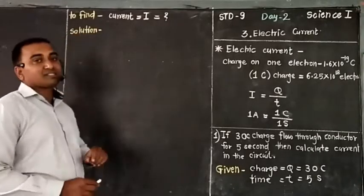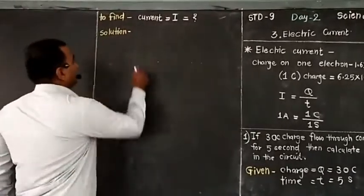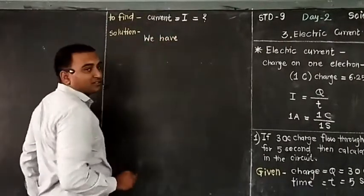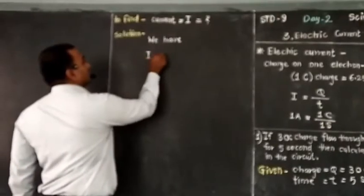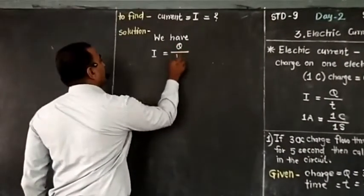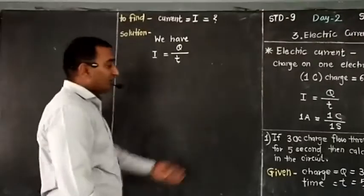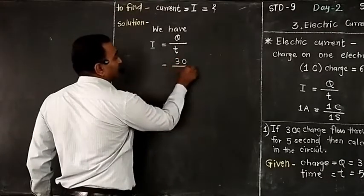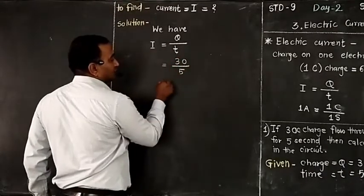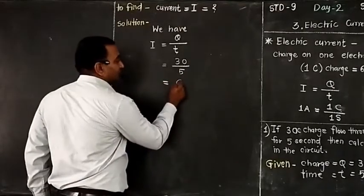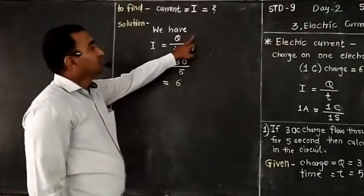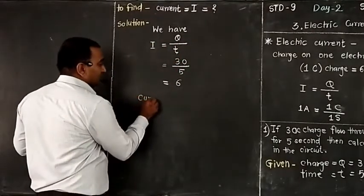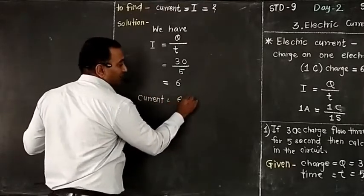So how can we solve this? We have one formula. Current I is equal to charge Q divided by time. The value of Q is 30, divided by time which is 5. If you solve this, we get the answer 6. But Coulomb divided by second is ampere. So current is equal to 6 ampere — that is your answer.